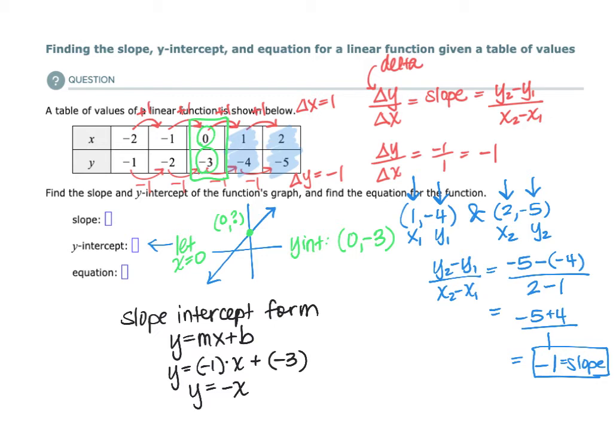But if we simplify that, negative 1 times x could be written just negative x. And if we're adding negative 3, that's really the same as just writing minus 3. So this would be the slope-intercept form of our line, y equals negative x minus 3, which is what they're looking for when they ask for the equation for this line.